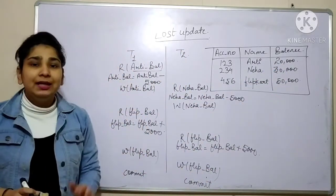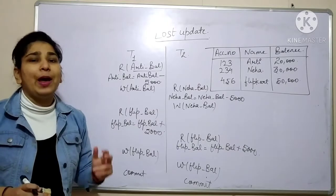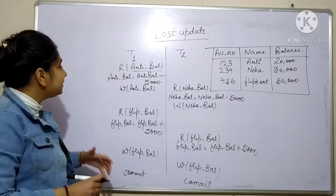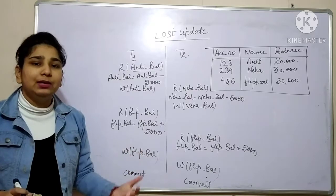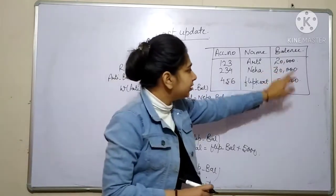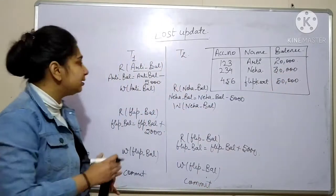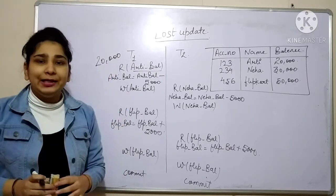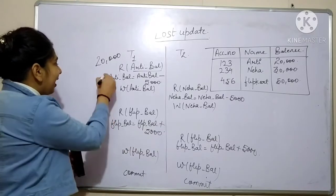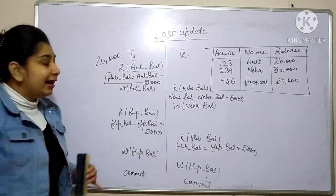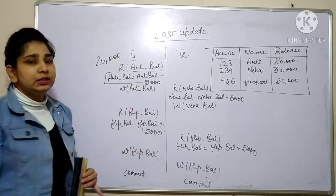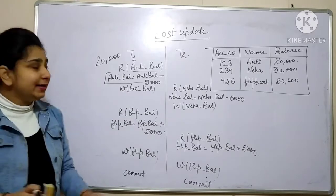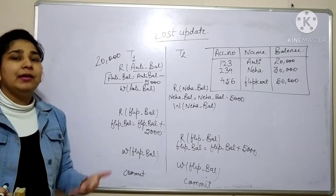A read operation means we fetch the value from the database and store it in the main memory. I fetched the balance: 20,000, and stored it in the main memory. Then I am decrementing 5,000 rupees from this balance, and all this operation is happening in the main memory.